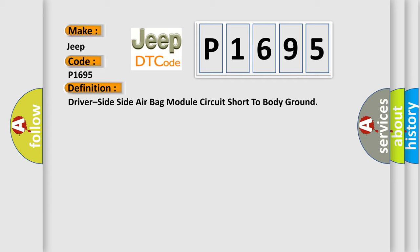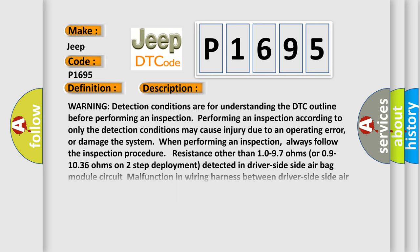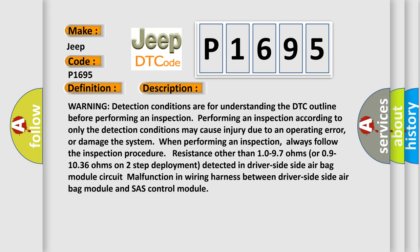The basic definition is: Driver side side airbag module circuit short to body ground. Warning detection conditions are for understanding the DTC outline before performing an inspection. Performing an inspection according to only the detection conditions may cause injury or damage the system. Always follow the inspection procedure. Resistance other than 10–97 ohms or 09–1036 ohms on two-step deployment detected in driver side airbag module circuit indicates a malfunction in the wiring harness between the driver side airbag module and the chassis control module.